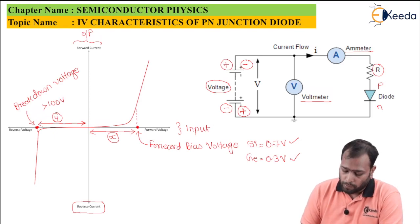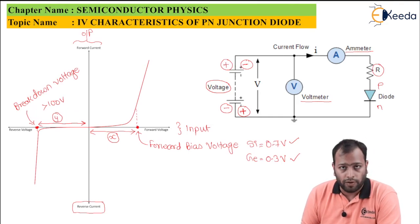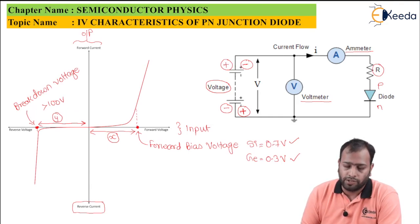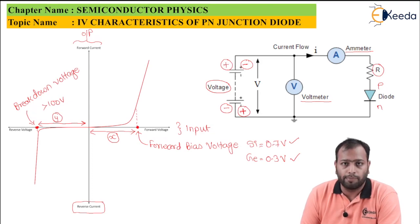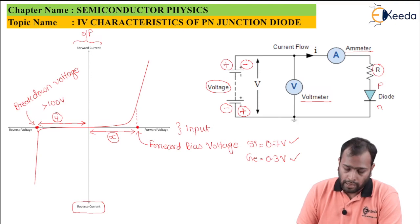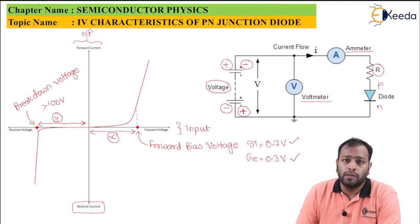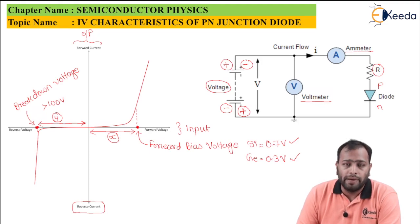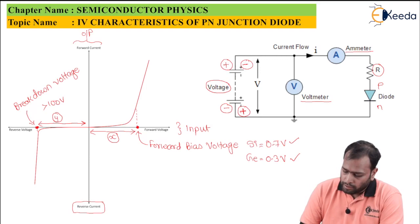In summary, the IV characteristics graph of a PN junction diode is divided into two regions: forward bias and reverse bias. In forward bias, the diode does not conduct up to the forward bias voltage, after which the I-V relationship becomes linear and the diode behaves as an ohmic device. In reverse bias, the diode does not conduct up to the breakdown voltage, after which avalanche breakdown occurs and current flows violently due to the depletion region being overcome.